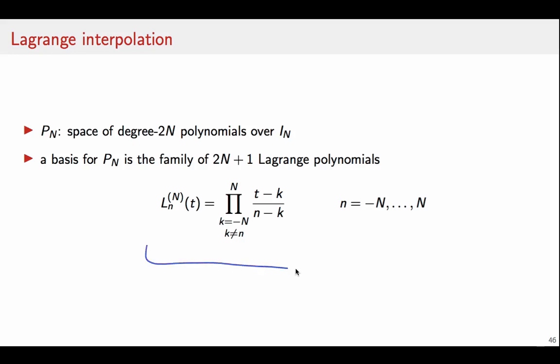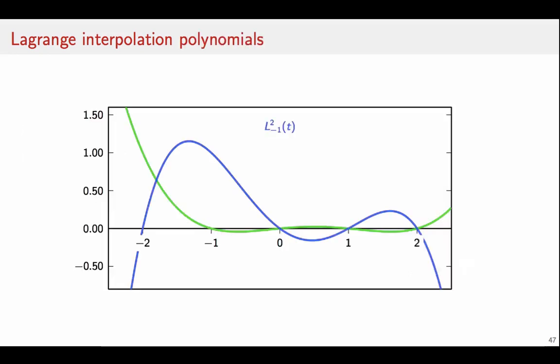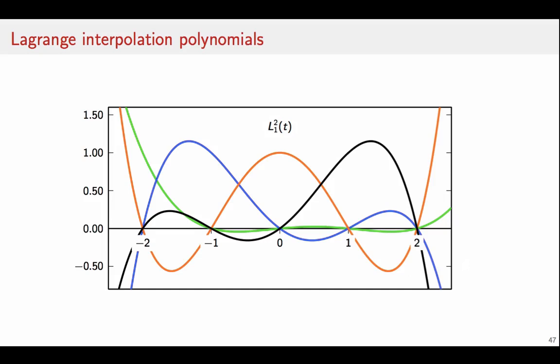Remember, the Lagrange polynomial was defined by this formula, which is dependent on the length of the interpolation interval, in this case 2N+1 points. And we have seen these polynomials, we have plotted them, they look like so. In this case, N equals 2, so we have polynomials of degree 4.